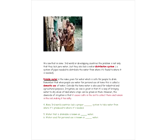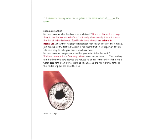Many third-world countries lack a proper distribution system to take water from where it's produced to where it's needed. Water that is drinkable is called potable water. Water used for personal use — like cooking and cleaning — is domestic water. And a drawback to using water for irrigation is the accumulation of salts, which just stick around in the ground.